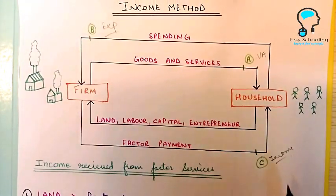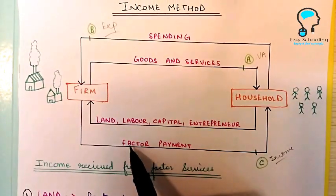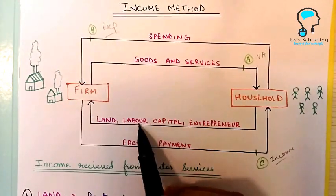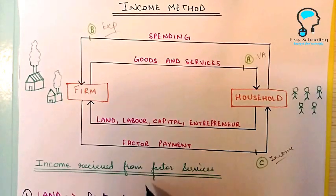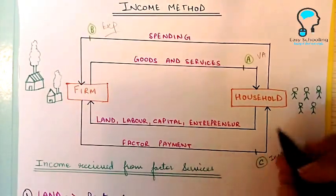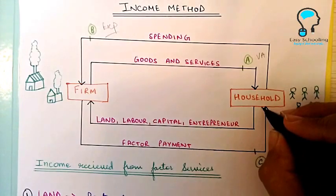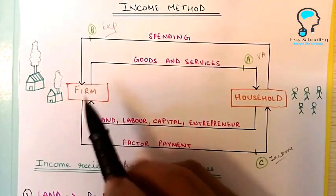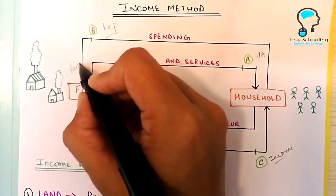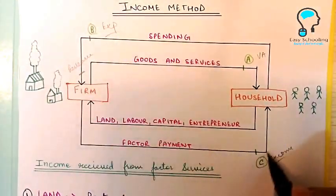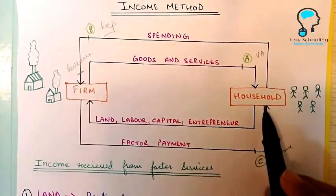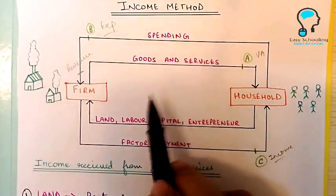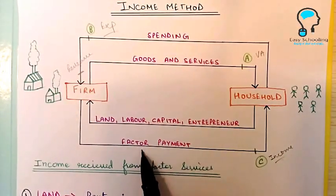When calculating GDP by the income method, we add all the factor payments received by the factor services: land, labor, capital, and entrepreneur. The income received from factor services is the income received by households, and it is also the income of the firm — because what the firm earns as revenue, it pays to households as factor payments. So this represents both the income of households and the income of firms.